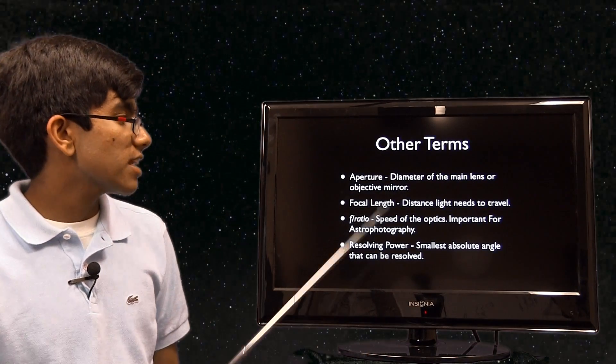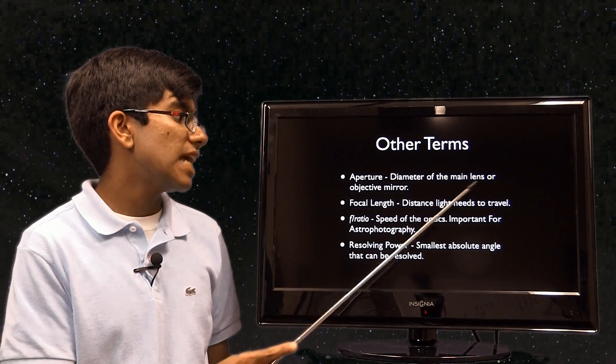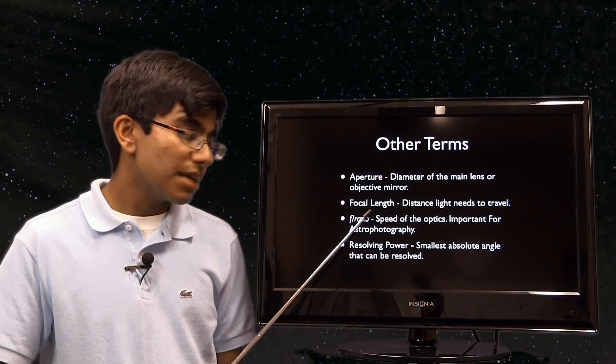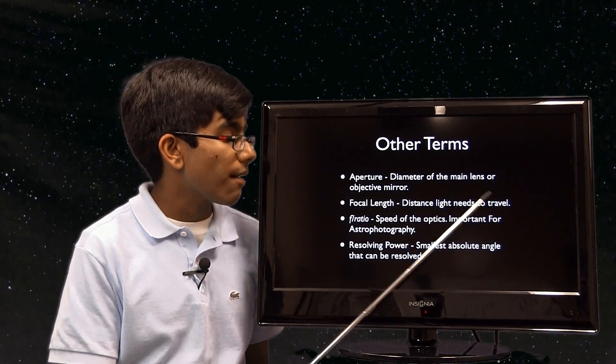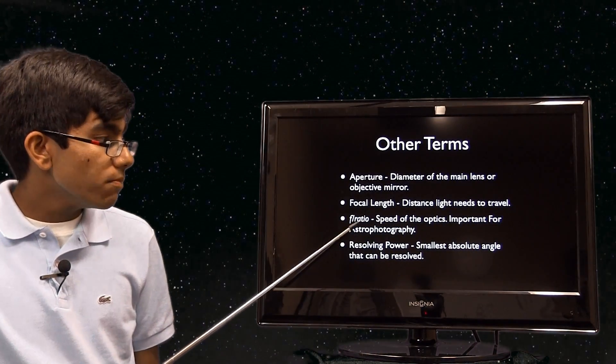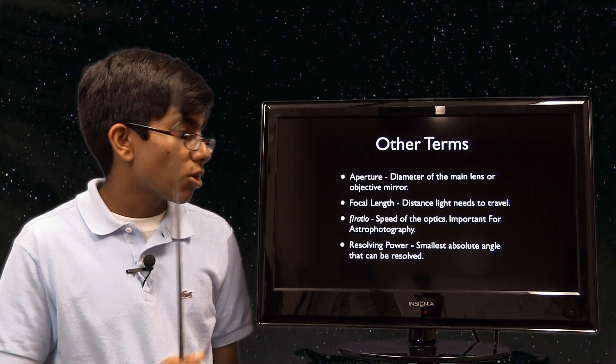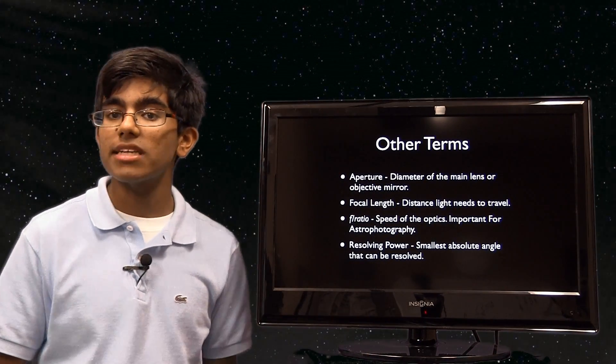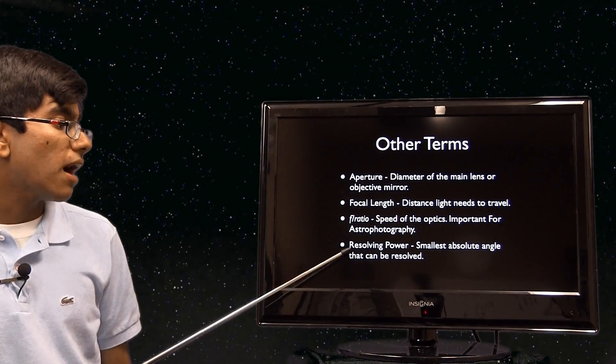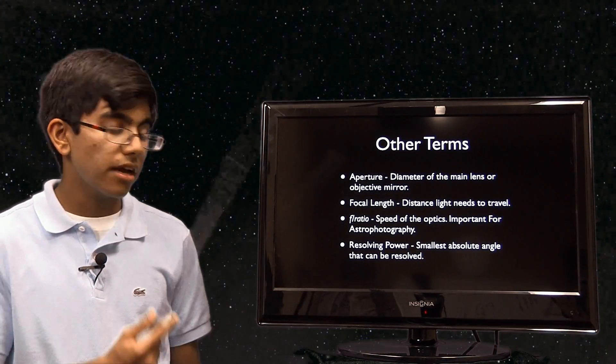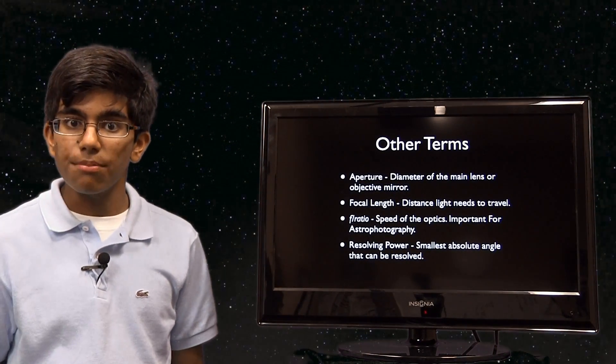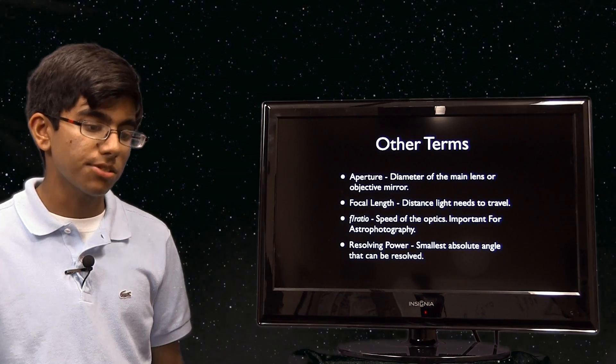Let's talk about some other terms. Aperture is the diameter of the main lens or objective mirror. Focal length, as the same in cameras, is the distance the light needs to travel. The f-ratio is the speed of the optics and it's important for astrophotography. And resolving power is the smallest absolute angle that can be resolved—the smallest object that you can see before everything becomes one.